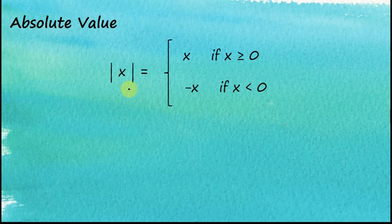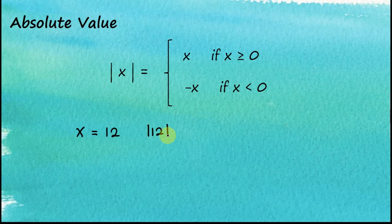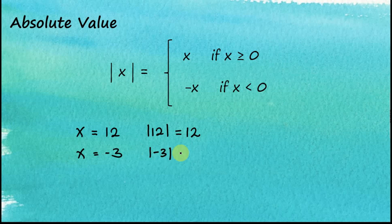By definition, the absolute value of x equals x if x is greater than or equal to zero, and equals negative x if x is less than zero. For example, when x equals 12, the absolute value of 12 is 12. When x equals negative 3, since negative 3 is less than zero, the absolute value of negative 3 equals negative of negative 3, which becomes positive 3.